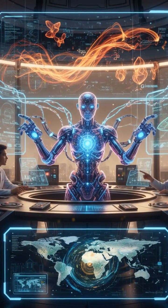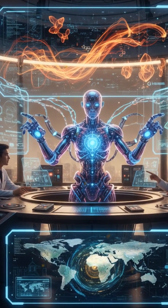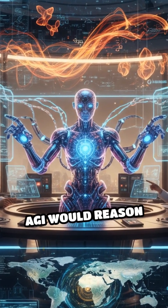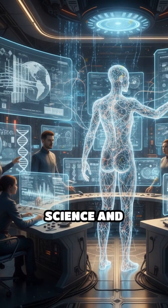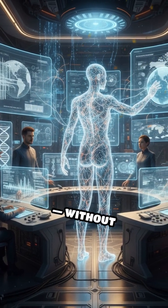Stage two, artificial general intelligence, AGI. AGI would reason like a human, applying knowledge across any field, from science and engineering to art and teaching, without retraining.